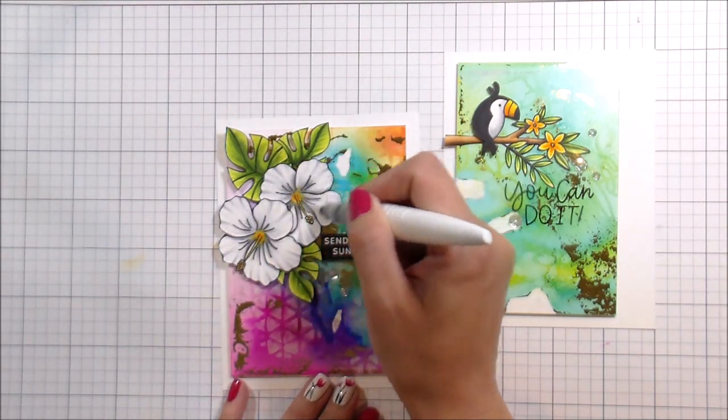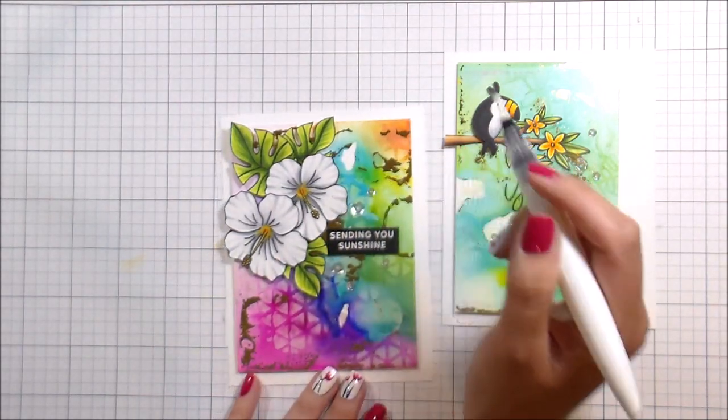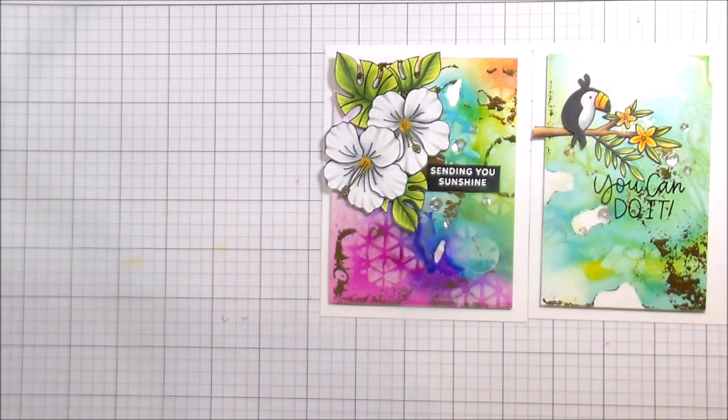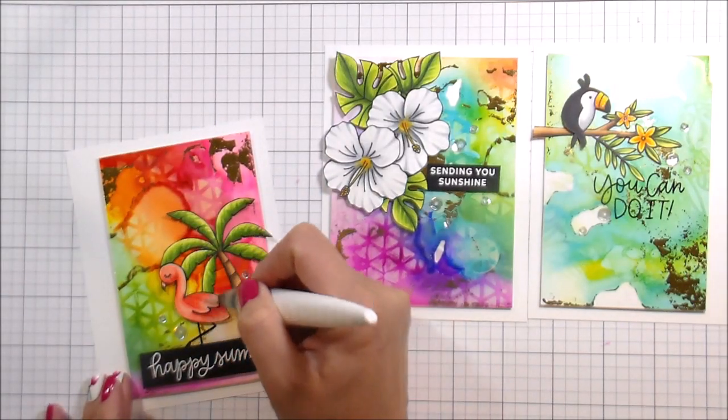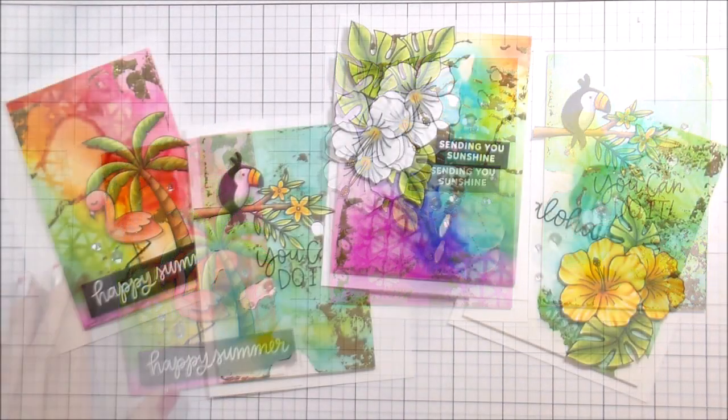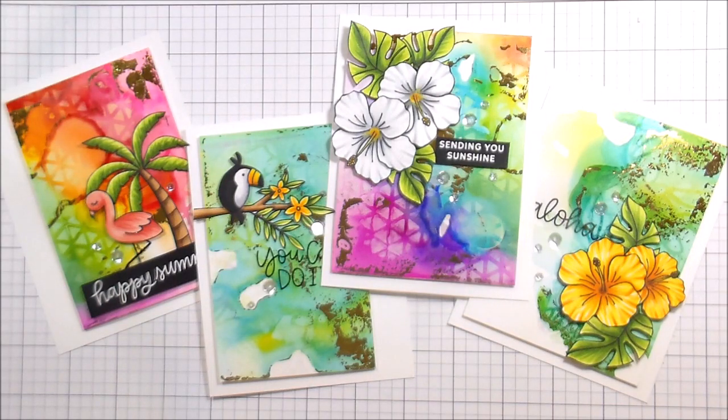The last step on all of these cards was to put some shimmer on the focal points. I put it on the flowers on both of the cards, on the flamingo for that one. These are all four of the cards. So I hope that you'll try the little technique that you learned 25 minutes ago, or something with the coloring. Thank you guys so much for joining me, and I will catch you on the next video. Bye!